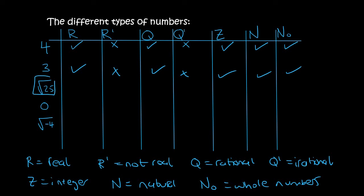Square root of 25 — students panic when they see this, but the square root of 25 is 5. So we can cross this out and pretend it's a 5. If it's a 5 then it follows the same classification as 3 and 4.